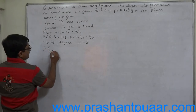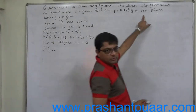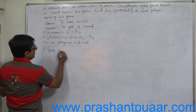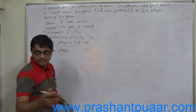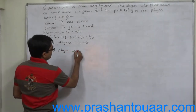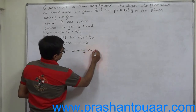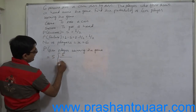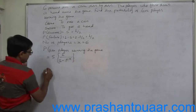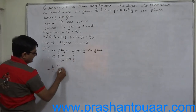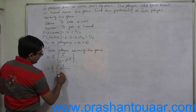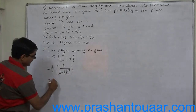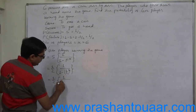Whatever answer you want to get, first we have to calculate the probability of the first player winning the game — that means the player who starts the game. We know the formula is S multiplied by 1 upon (1 minus F raised to X). Here, S = 1/2, into 1 upon (1 minus 1/2) raised to 6.